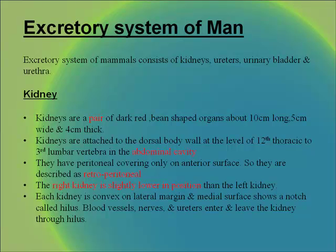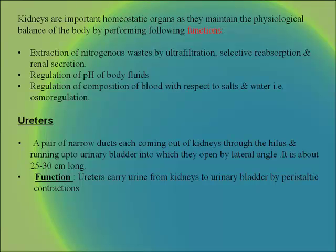Each kidney is convex on the lateral margin and the medial surface shows a notch called hilus, through which blood vessels, nerves and ureters enter and leave. Kidneys are important homeostatic organs that maintain the physiological balance of the body by extraction of nitrogenous waste by ultrafiltration, selective reabsorption and renal secretion, regulation of pH of body fluids, and regulation of blood composition with respect to salts and water, i.e., osmoregulation.